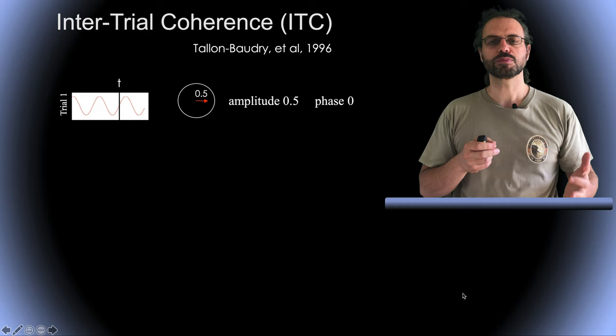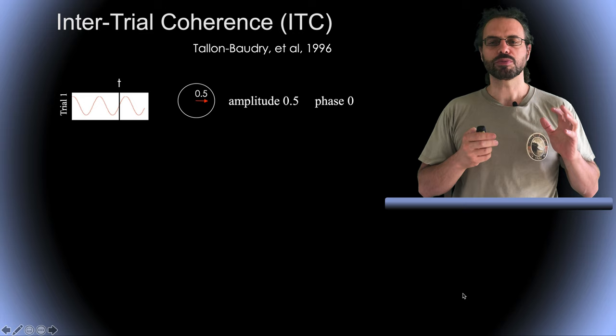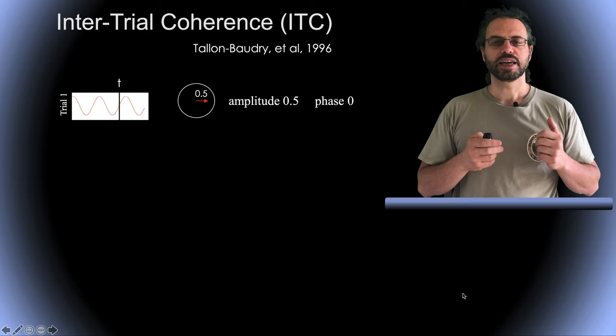Well, we can compute what we call intertrial coherence. This measure was pioneered by Talon Baudry and collaborators in 1996, although they used a different name, the phase locking factor, when Scott McKeague coined the term intertrial coherence a few years later.